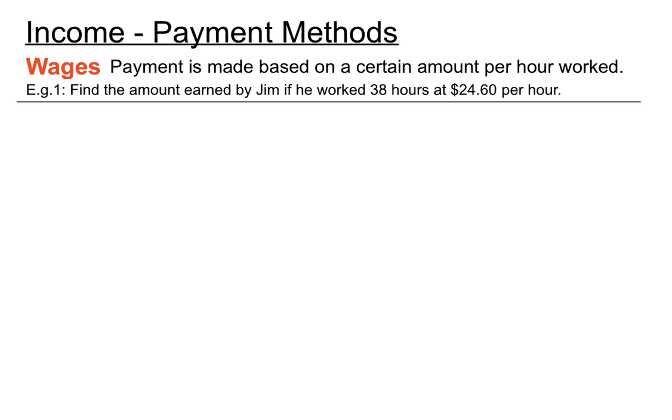So questions will be looking a bit like this example. Find the amount earned by Jim if he works 38 hours at a rate of $24.60 per hour. Now that looks pretty straightforward and it actually is. So to work out how much he earns altogether there, we just do that 38 times the hourly rate of $24.60. When it says per hour, remember that's like for each hour.